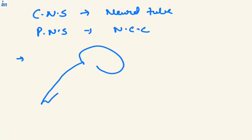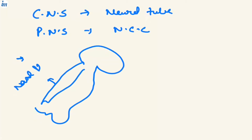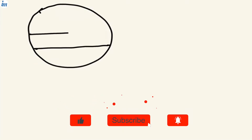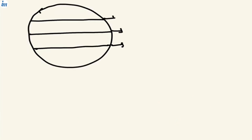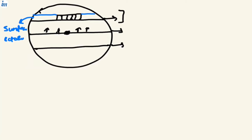This is a developing embryo, and this is the dorsum of the developing embryo, which forms from the neural plate ectoderm. The notochord, which sits on the mesoderm, will stimulate and proliferate to give signals to the ectoderm to form, first in the center, the neural plate ectoderm, and on the periphery, the surface ectoderm. At the junction between both, there is a presence of neural crest cells.